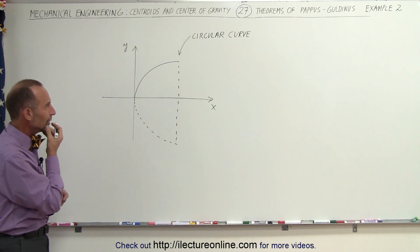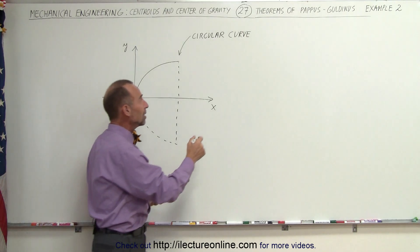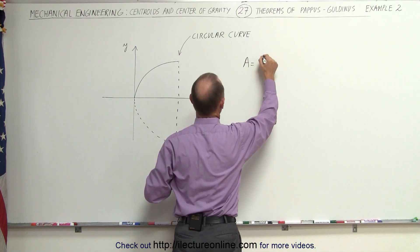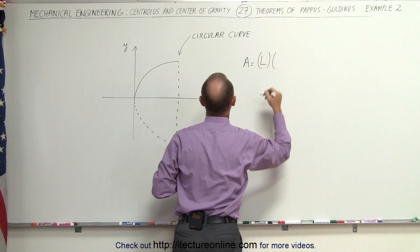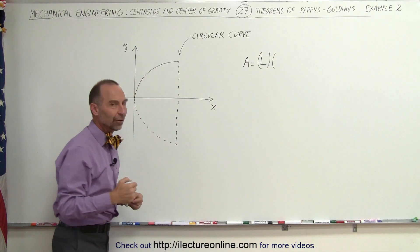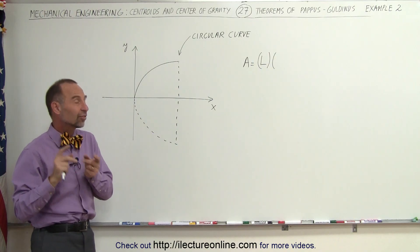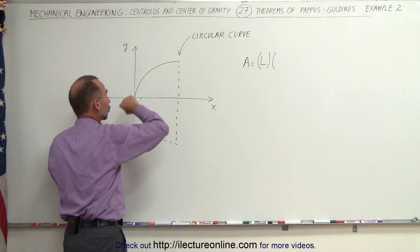Now what we need to do is find the area, and the equation says that the area is equal to the length of the curve times the distance covered by the centroid as it rotates about the x-axis. Now the question is,